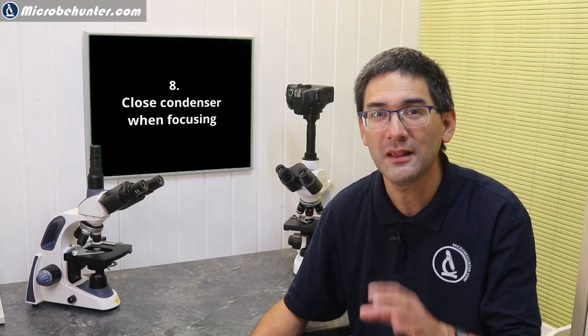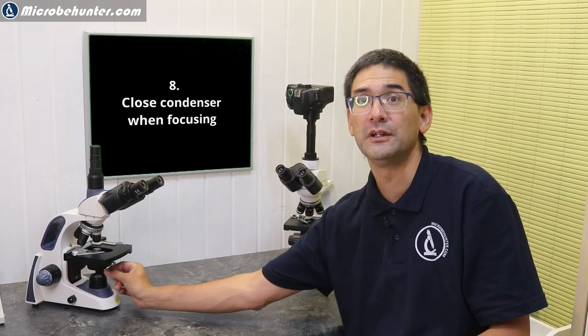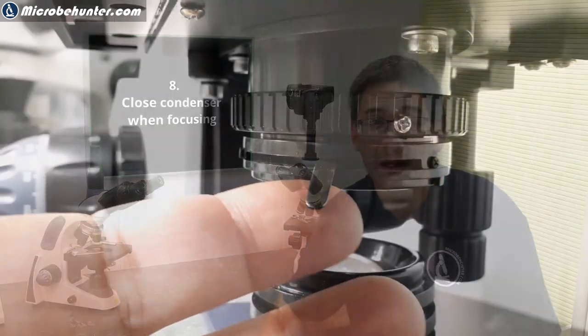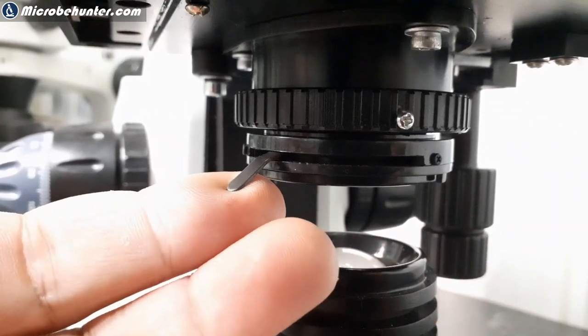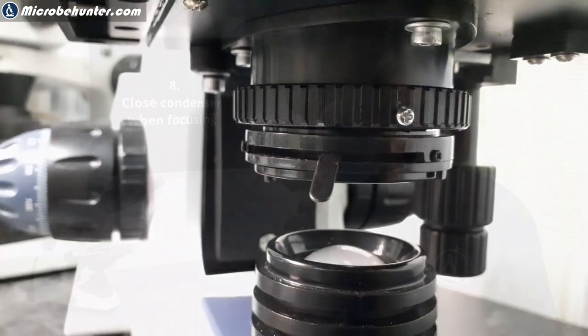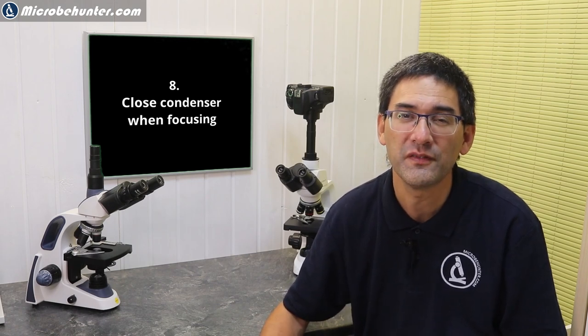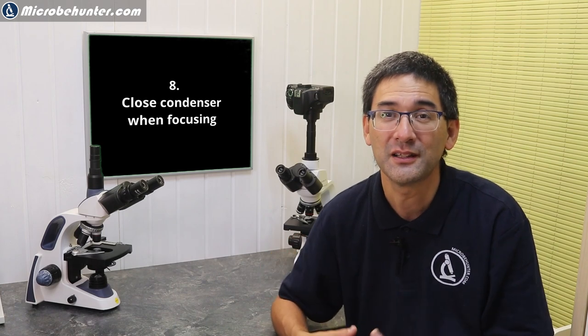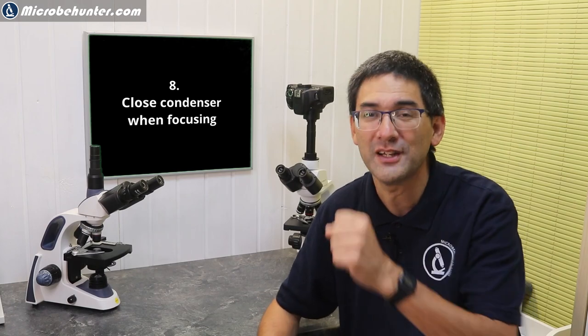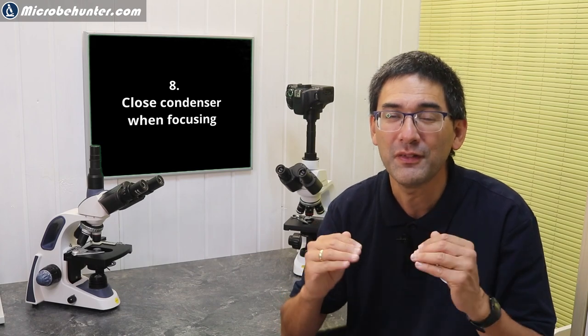Problem number eight: beneath the microscope is an optical system called the condenser. You can open and close the condenser diaphragm by moving a lever horizontally. One of the biggest mistakes is starting microscopy with the condenser fully open. This gives a lot of light but reduces contrast and decreases depth of field, making it very difficult to focus. When you start with low power objective, close the condenser all the way.